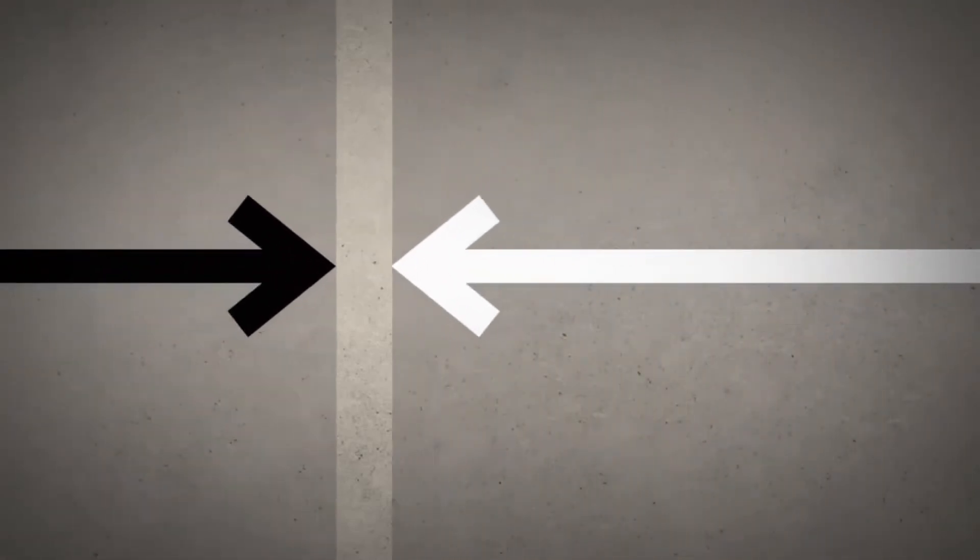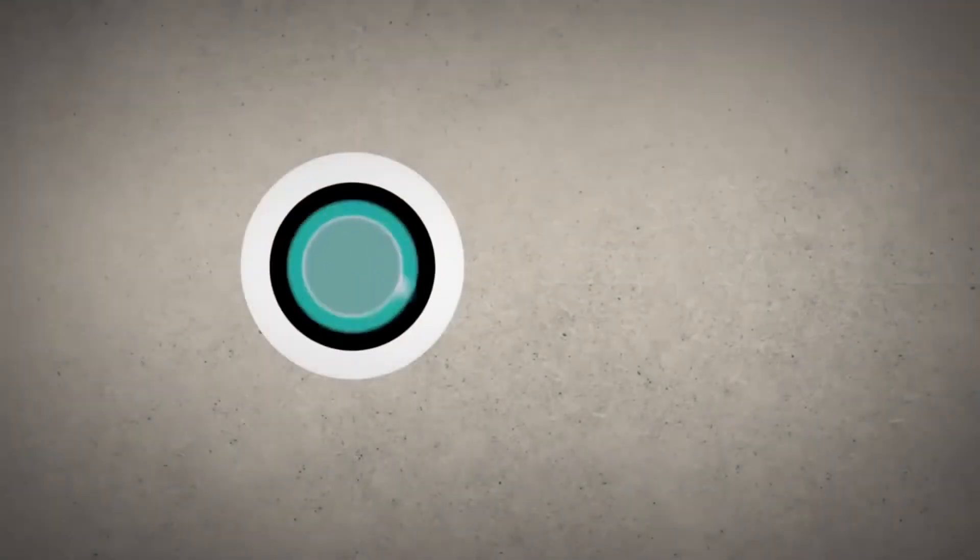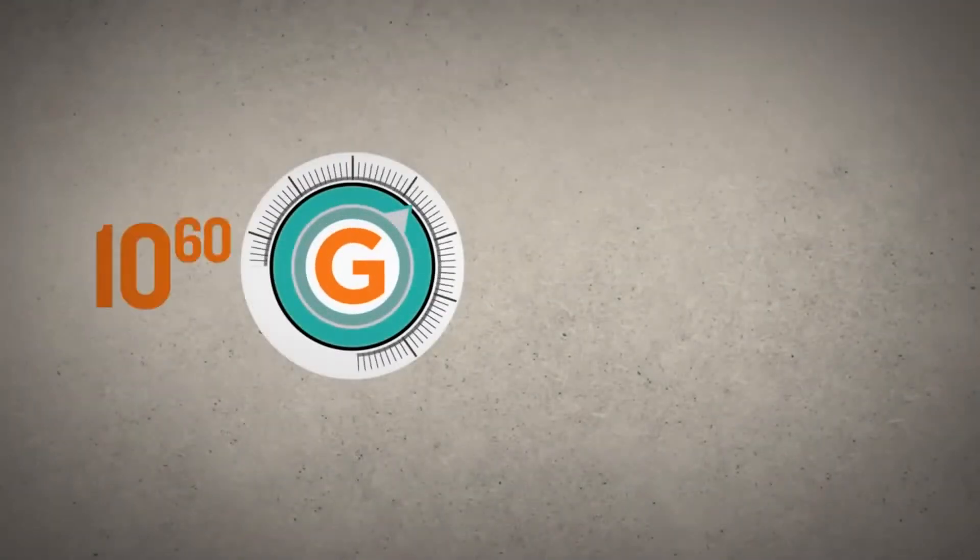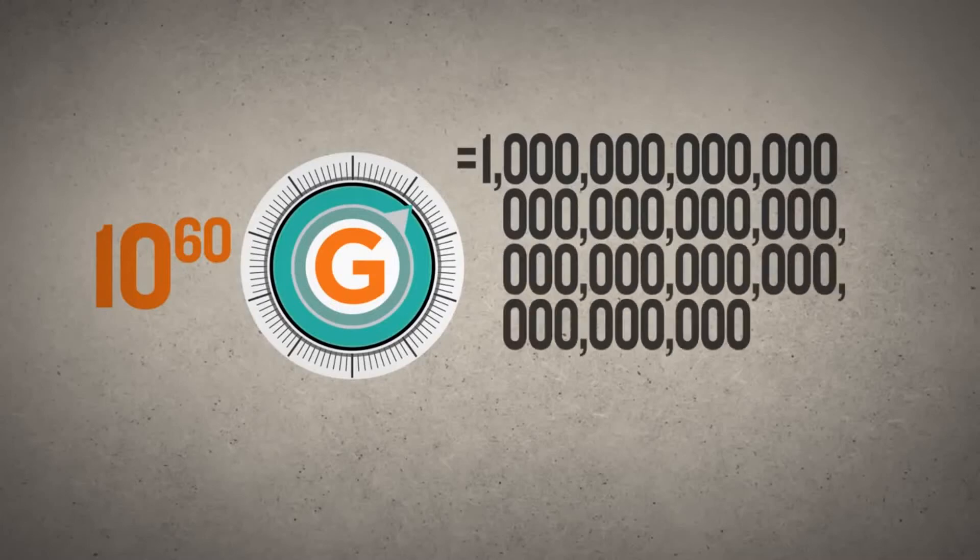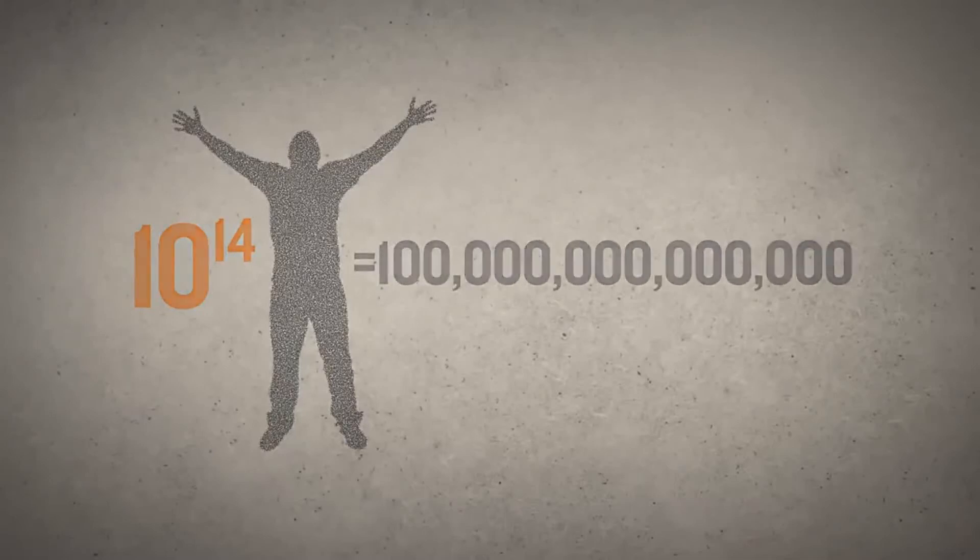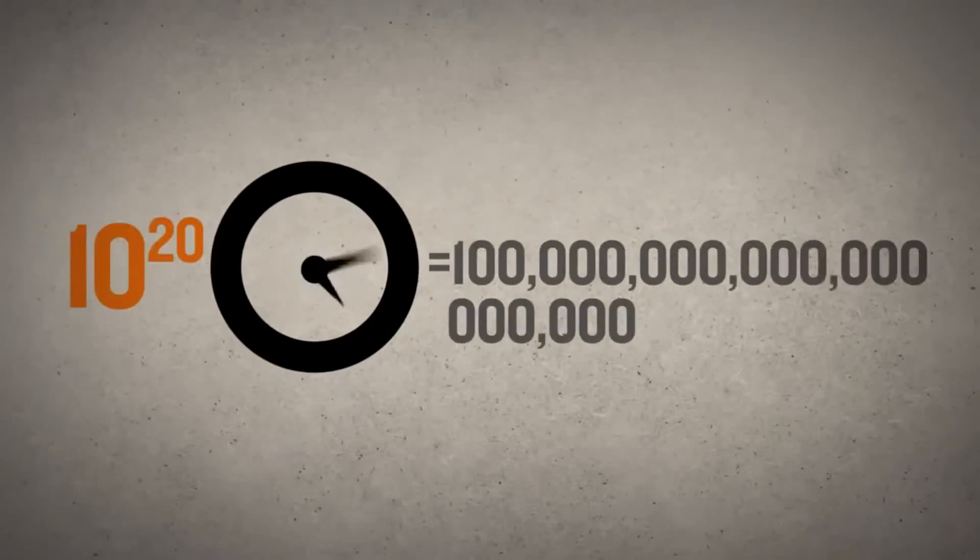To understand how exceedingly narrow this life-permitting range is, imagine a dial divided into 10 to the 60th increments. To get a handle on how many tiny points on the dial this is, compare it to the number of cells in your body or the number of seconds that have ticked by since time began.